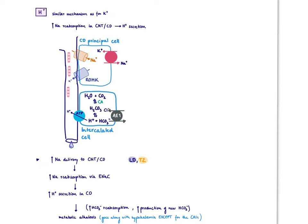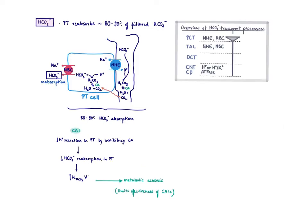One question you might have: why didn't I list carbonic anhydrase inhibitors here for the metabolic alkalosis effect? The reason is that carbonic anhydrase inhibitors block carbonic anhydrase, so you cannot even provide the protons that would be lost at the collecting duct. Additionally, carbonic anhydrase inhibitors directly affect acid-base balance in the proximal convoluted tubule, particularly with bicarbonate.